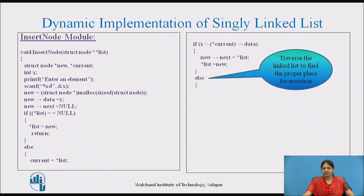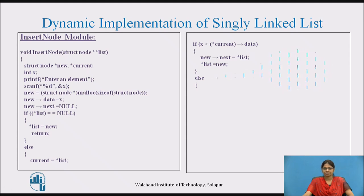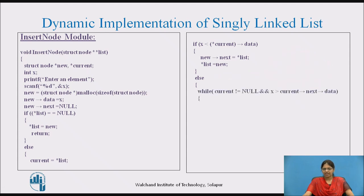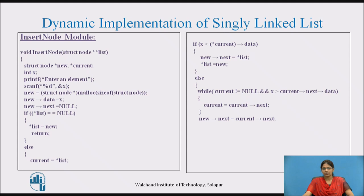Else we traverse the linked list to find the proper place for insertion. We traverse till current is not null and x is greater than current->next->data. Each time this condition is true, current is moved to the next node. Once we reach the proper place, new->next is assigned to current->next and current->next is assigned to new.